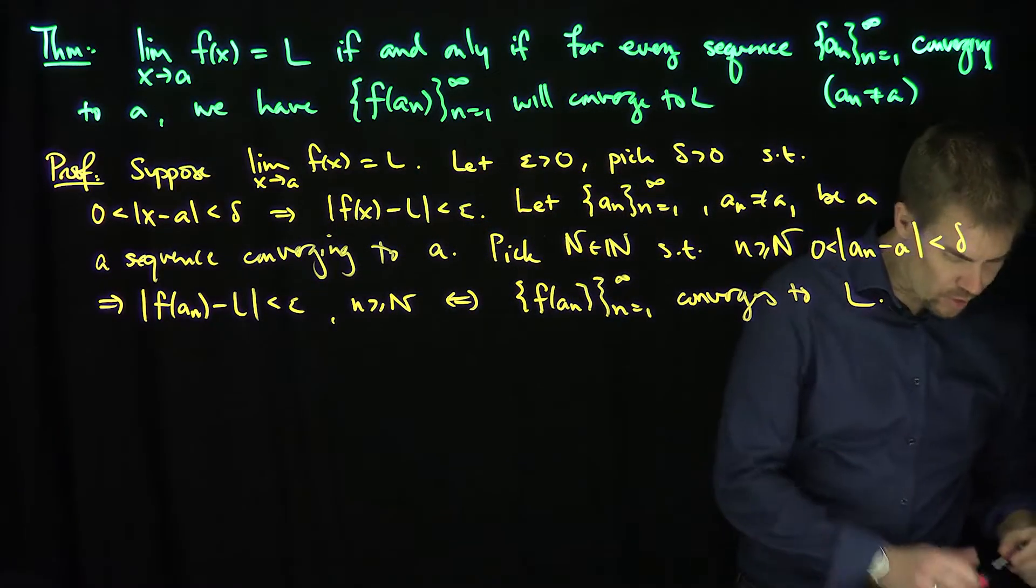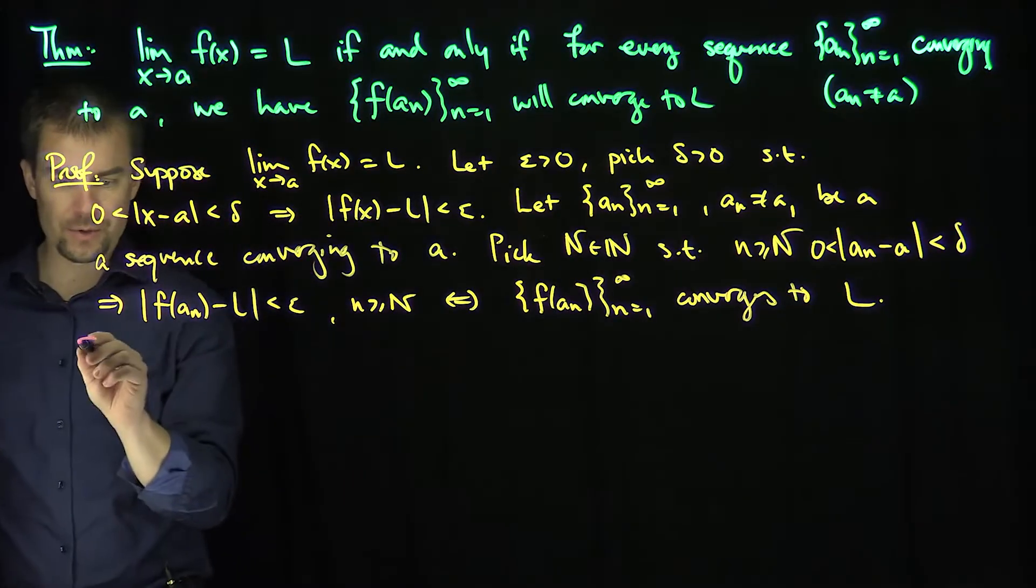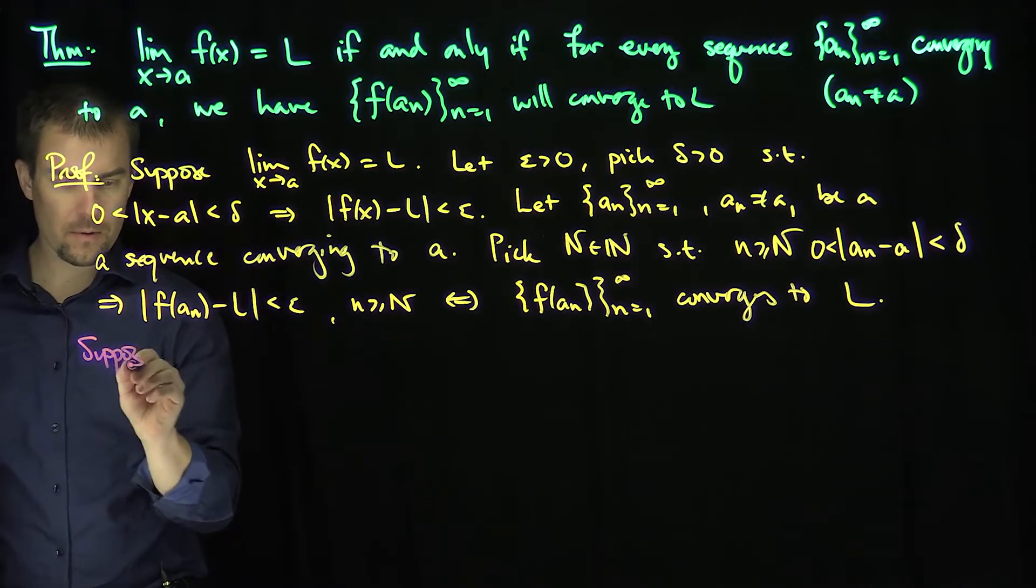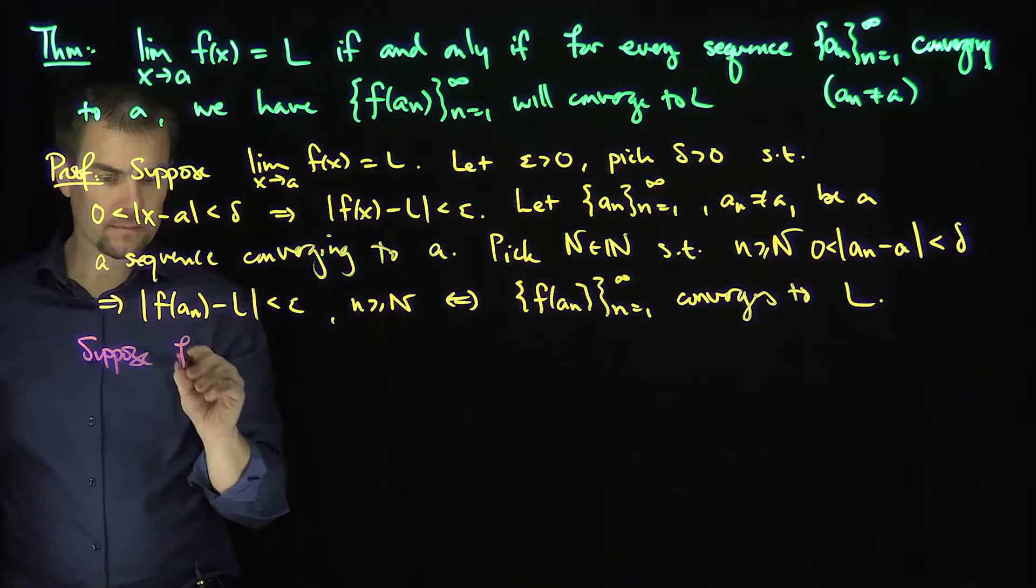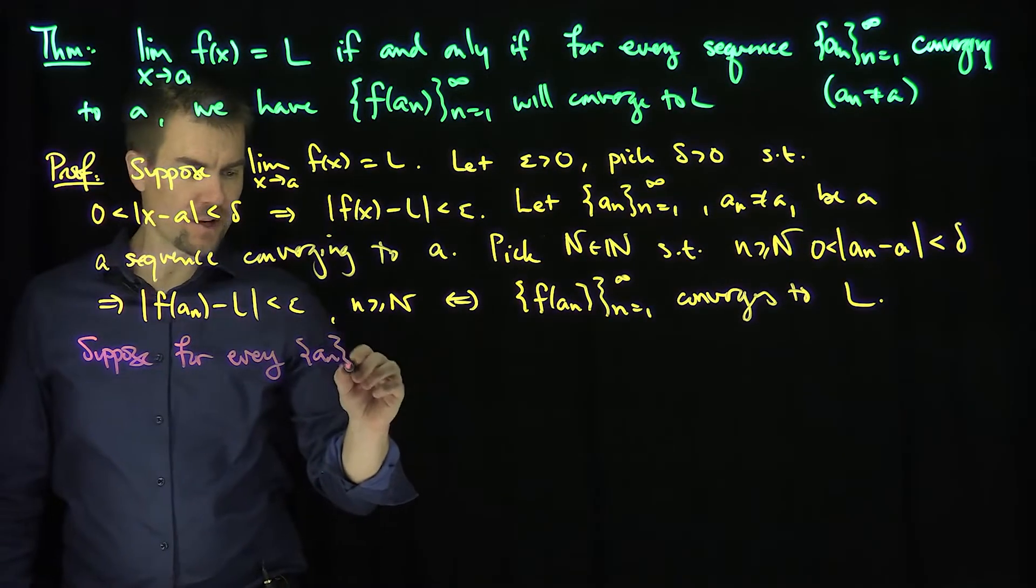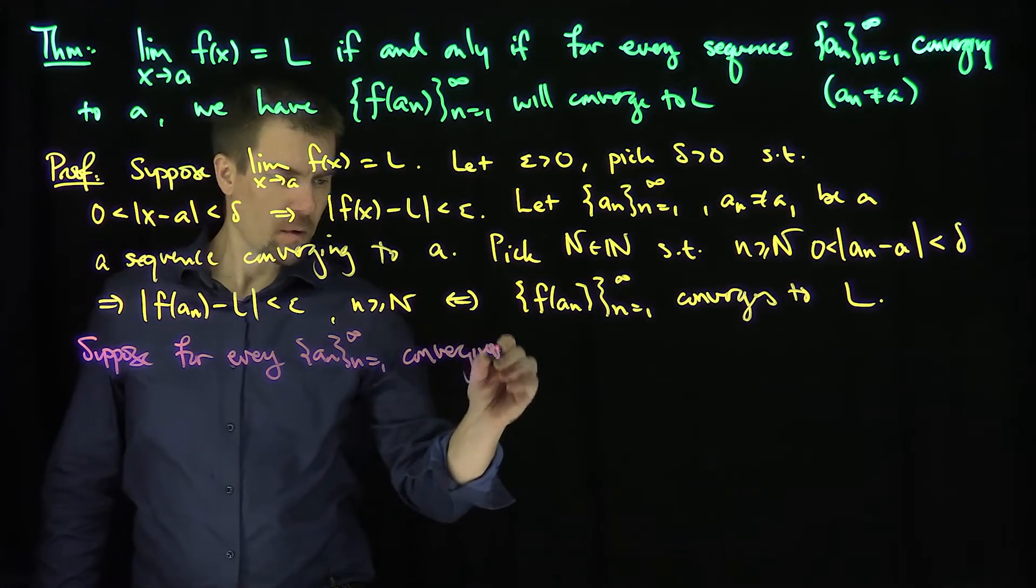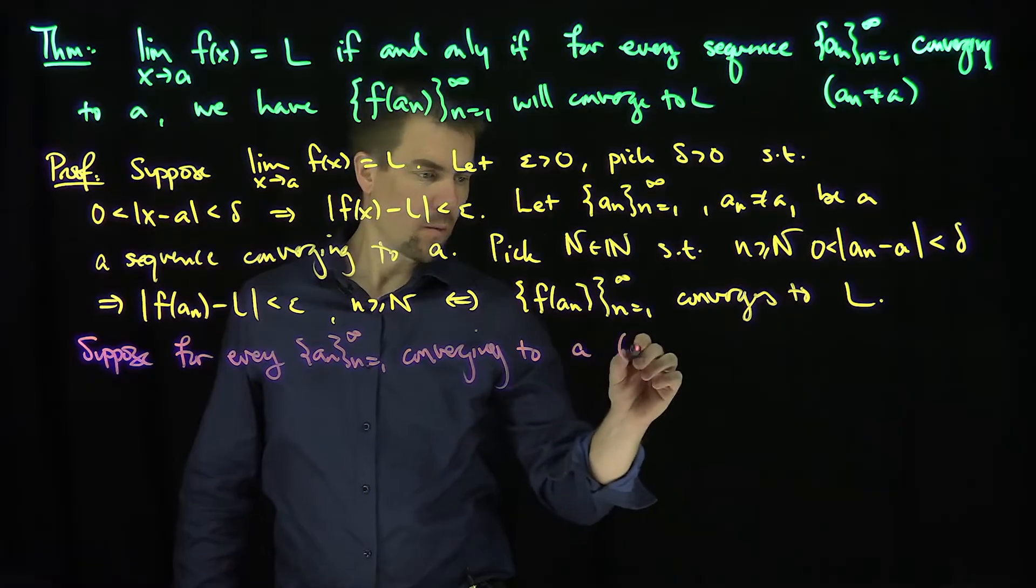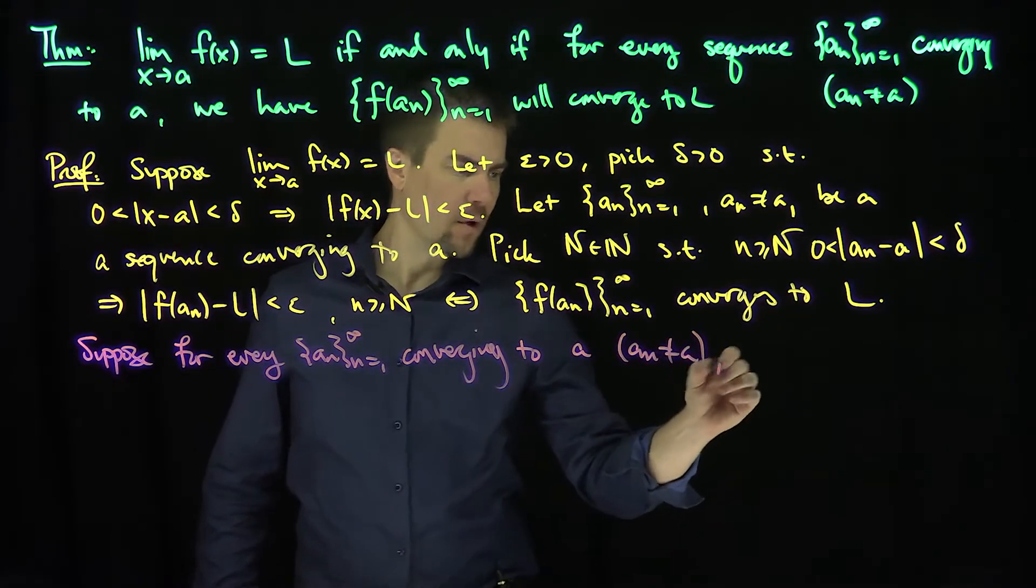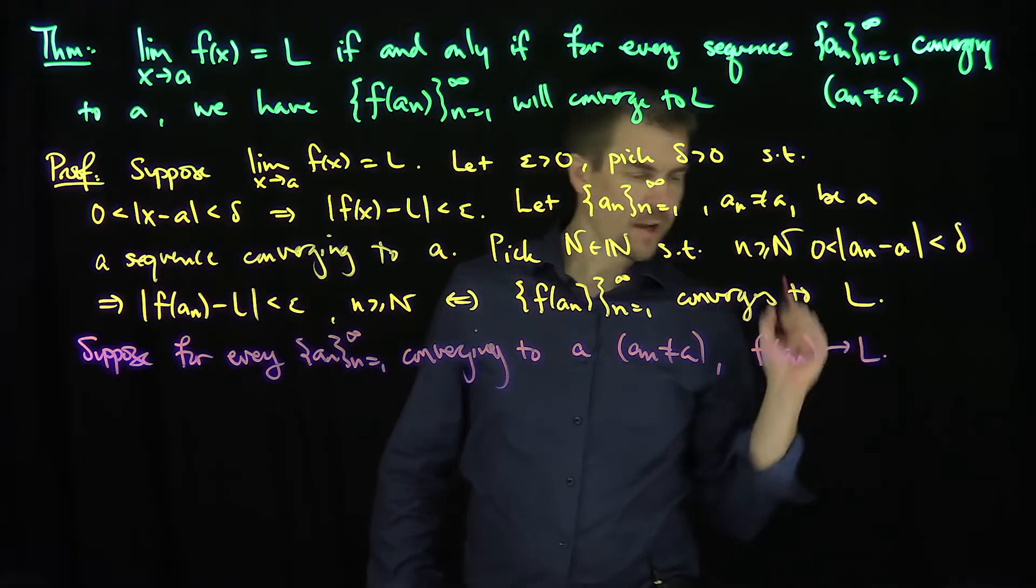And to do the opposite inclusion, we're going to do it by contradiction. So suppose the opposite is true. Suppose for every {aₙ} sequence converging to a with aₙ not equal to a, we have {f(aₙ)} converging to L.